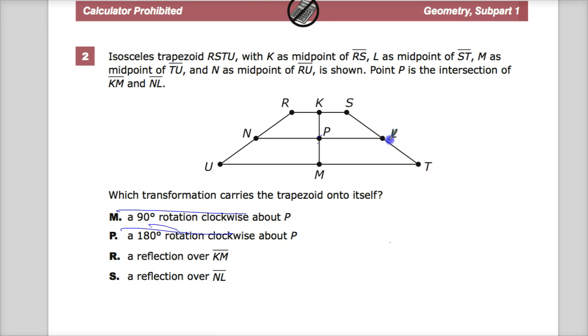So if I flipped this over line NL, or reflected it, this point would end up right down here. This point would end up right down here. This point would end up up here, and this point would end up up here.